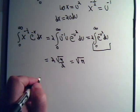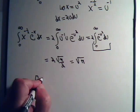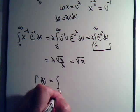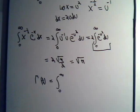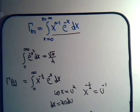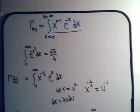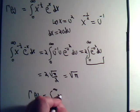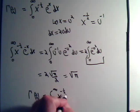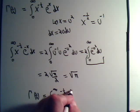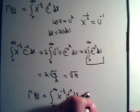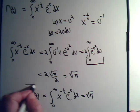So finally, we can declare that the gamma function of one half, which by definition is this integral of x to the minus one half e to the minus x dx, equals the square root of pi.